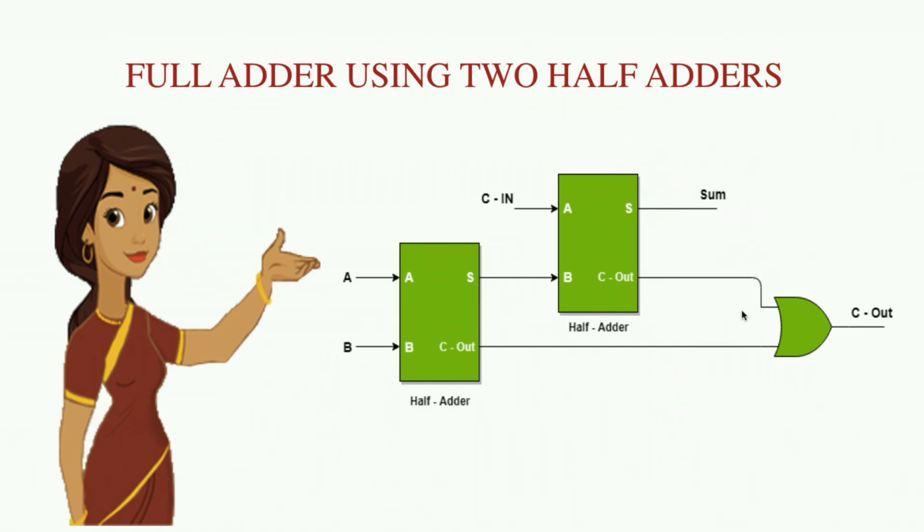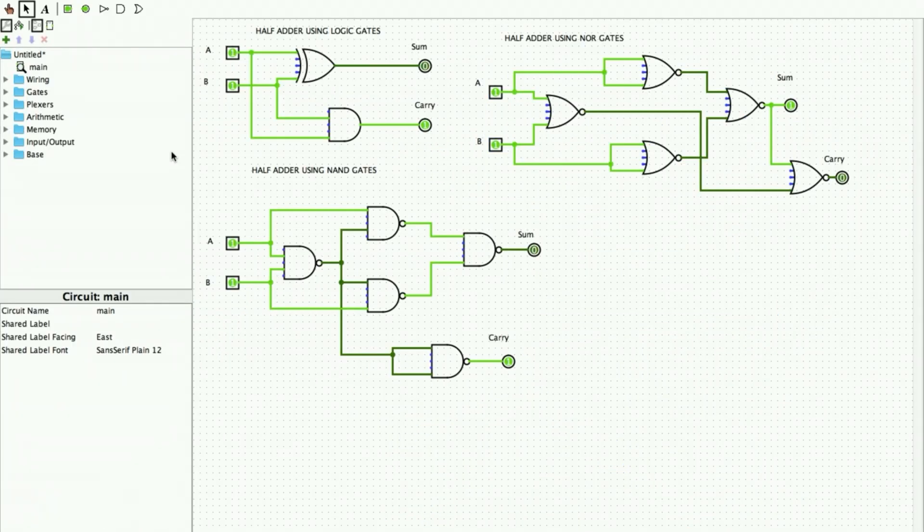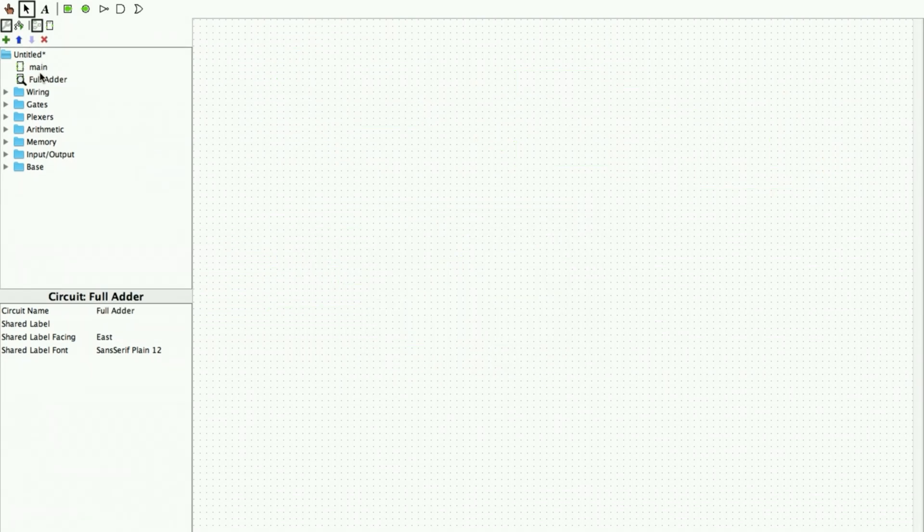A full adder can also be implemented using NAND gate and NOR gate as these are universal gates. In order to implement my full adder circuit, I can just click on this plus to add circuit. I'll name it full adder and I give okay.